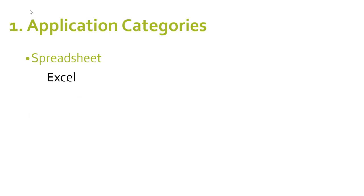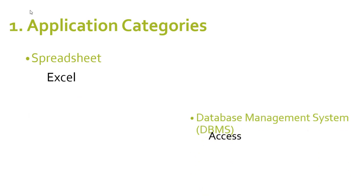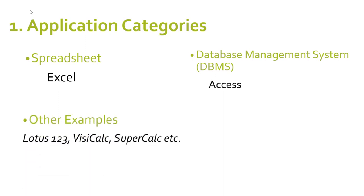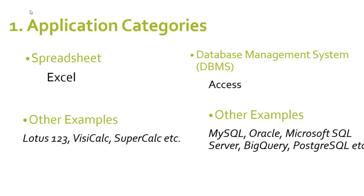Looking at the categories each application falls under: Excel is a spreadsheet application, falling in the spreadsheet category, whereas Microsoft Access falls in the database management system category. Excel is a spreadsheet package; Access is a database management system. Other examples in the spreadsheet arena include Lotus 1-2-3, VisiCalc, SuperCalc, etc., while other database management systems include MySQL, Oracle, Microsoft SQL Server, PostgreSQL, and others.